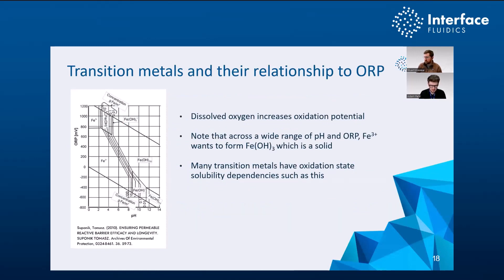There are tools to help you understand what type of iron you have when interpreting your water report. Oxidation reduction potential (ORP) is something folks concerned about corrosion pay attention to. If you want to understand the state of iron in your groundwater, you can look at speciation plots that use pH and ORP to understand what type of iron you have and whether it's likely to form a specific type of solid. These speciation plots are available for different transition metals in your water.